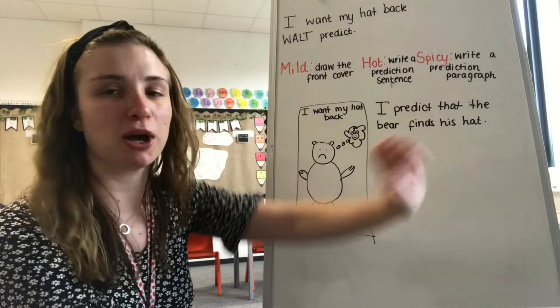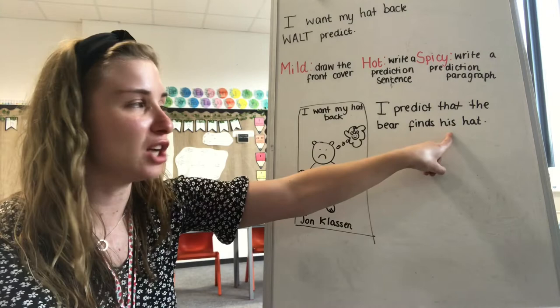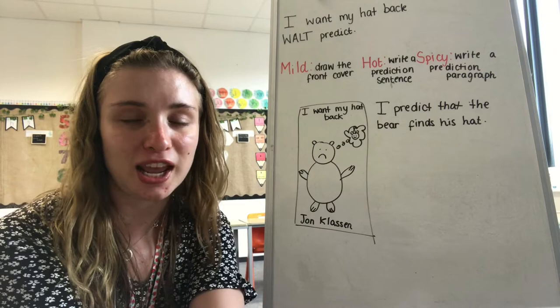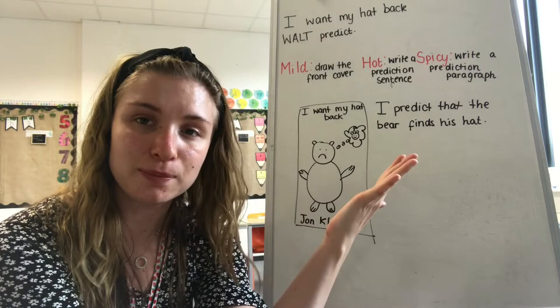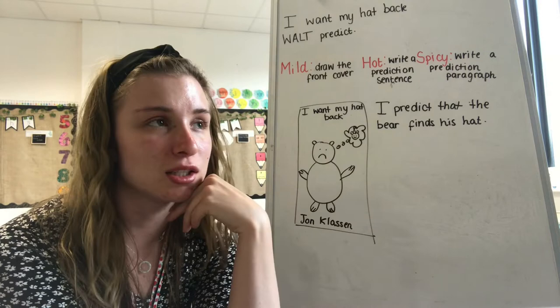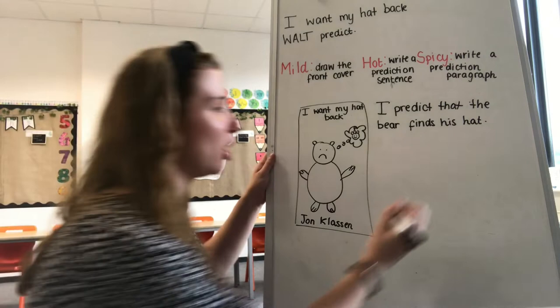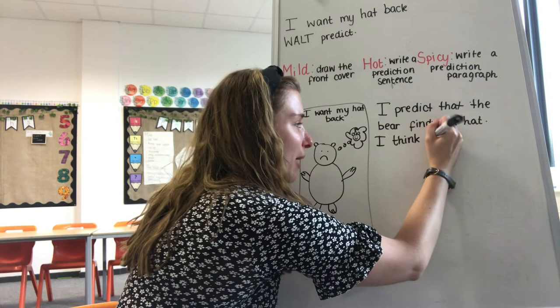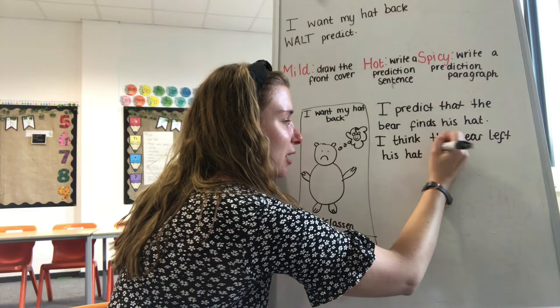Now let's work on spicy. We are going to be writing a prediction paragraph. To write our paragraph today, I would like at least three sentences. We've already done one, so we need to write two more sentences about what we think is going to happen. We've already got: I predict that the bear finds his hat. Now I'm going to think — where do I think his hat is? Do I think he's lost it, left it somewhere, or do I think someone's taken his hat? I think he's left it somewhere — I think he's left his hat in a tree. So I'm going to write: I think the bear left his hat in a tree.